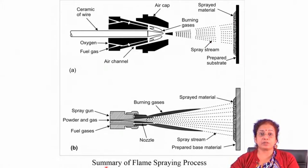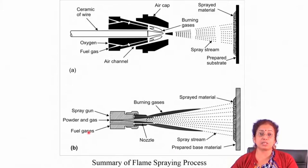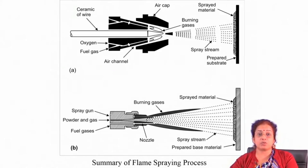The main parameters in flame spraying are: the oxygen-to-acetylene ratio or oxygen-to-propane ratio, powder particle size, the form of the coating material (rod or wire), the velocity at which it is spread over the substrate surface, substrate pretreatment, and the nozzle-to-substrate distance. These four to five parameters control the quality of the coating.